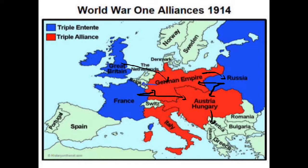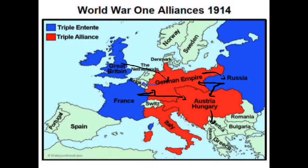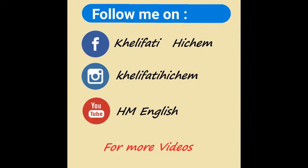Germany attacked France through Belgium. Belgium was a neutral country according to the Treaty of London in 1839. When Germany invaded Belgium, it violated a treaty it had accepted long ago. England, believing it had a duty to protect the Treaty of 1839, entered the war because of Germany's violation — Belgium thus pulled Britain into the war. Then Japan entered the war, and later Italy and the United States entered on the side of the Allies in 1917. This is how the system of alliances worked and brought about the beginning of the war.